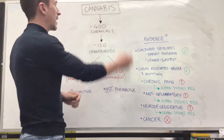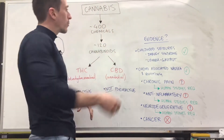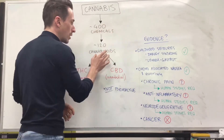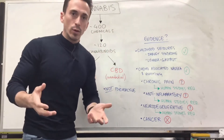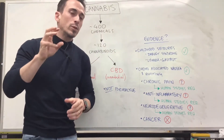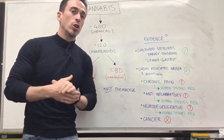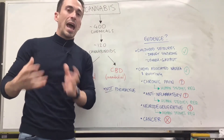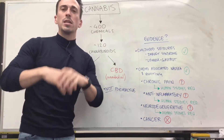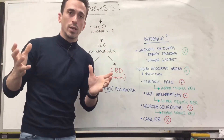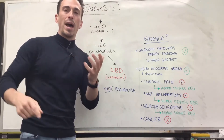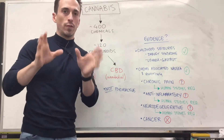First thing is that cannabis, also known as marijuana, has around about 400 different chemicals inside of it, and of these 400 chemicals, 120 are what we term cannabinoids. They're termed cannabinoids because they bind to specific receptors in our body called cannabinoid receptors, and this endocannabinoid system plays a multitude of different roles such as involvement in sleep-wake cycles, mood, appetite, pain, memory, and a whole bunch of different things.